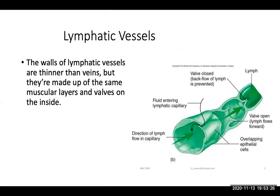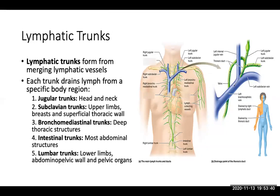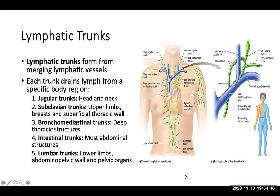The walls of lymphatic vessels will be thinner than veins, but they're made up of the same muscular layers and valves on the inside to help the lymph flow forward in one direction. The lymphatic trunks form from merging lymphatic vessels, and each trunk will drain lymph from a specific body region. The jugular trunks drain lymph from your head and neck; the subclavian trunks drain lymph from the upper limbs, breast, and superficial thoracic wall; the bronchomediastinal trunks drain from deep thoracic structures; the intestinal trunks from most abdominal structures; and the lumbar trunks from your lower limbs, abdominal pelvic wall, and pelvic organs. These trunks eventually lead into the left or right subclavian veins, into the brachiocephalic vein, and into the superior vena cava.